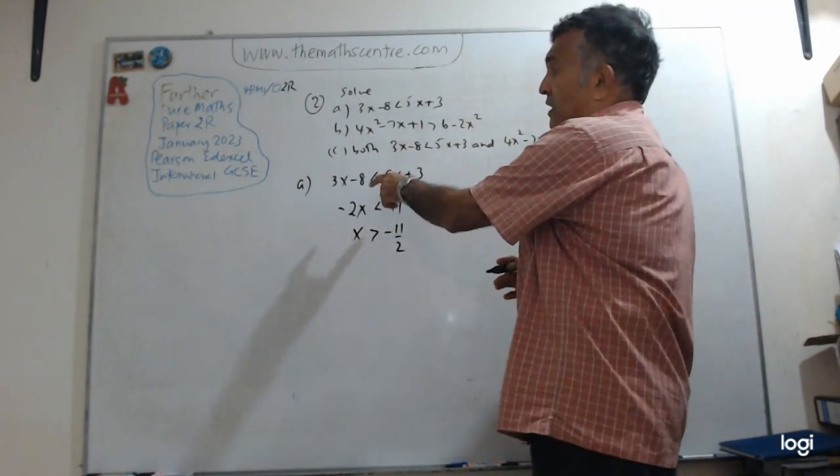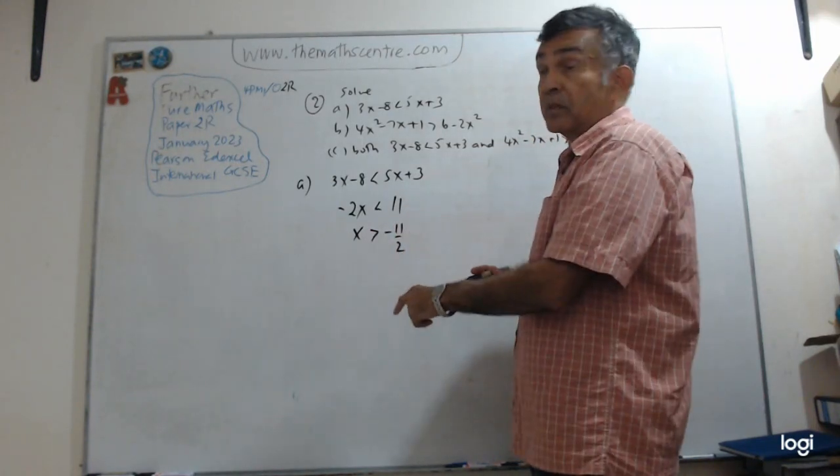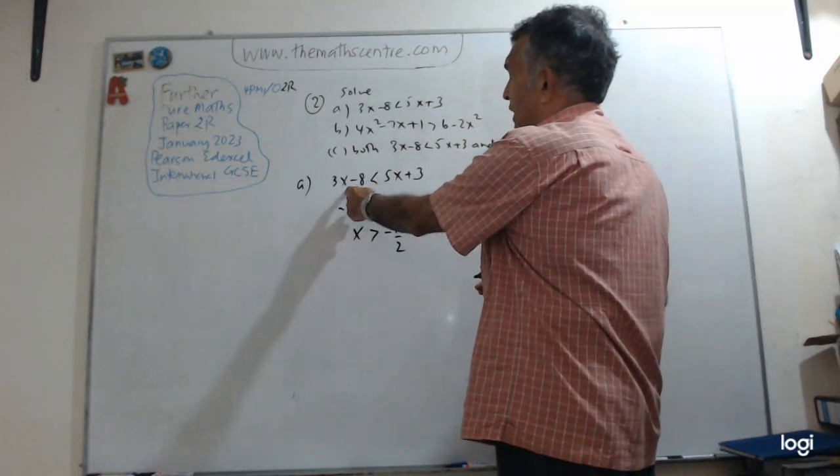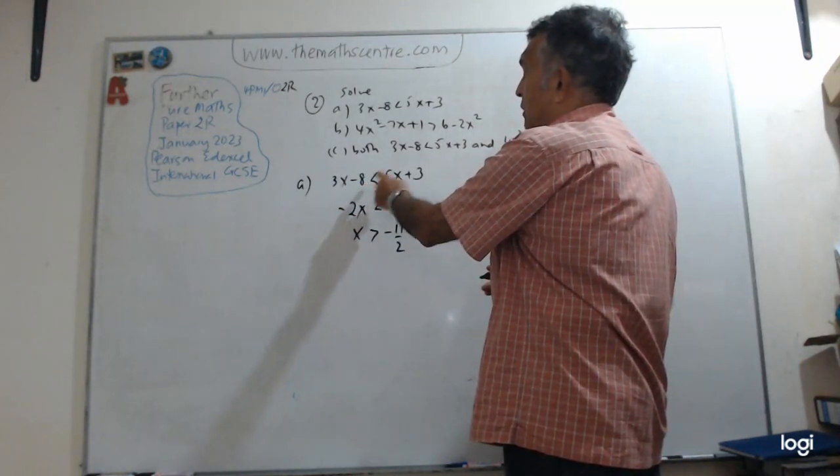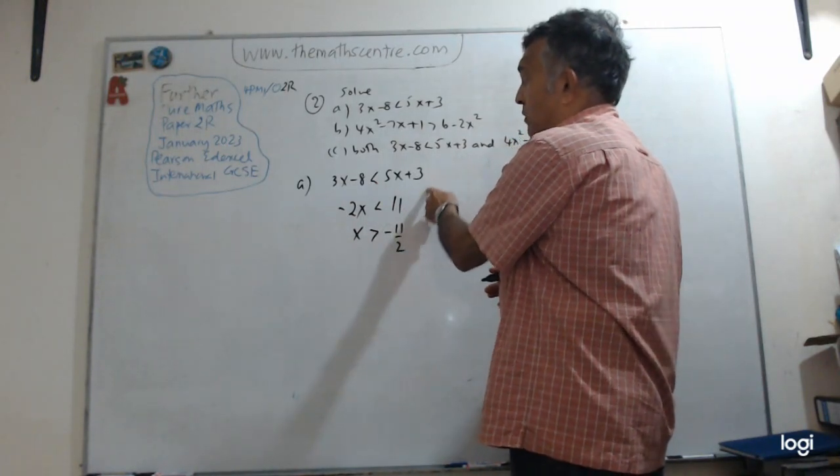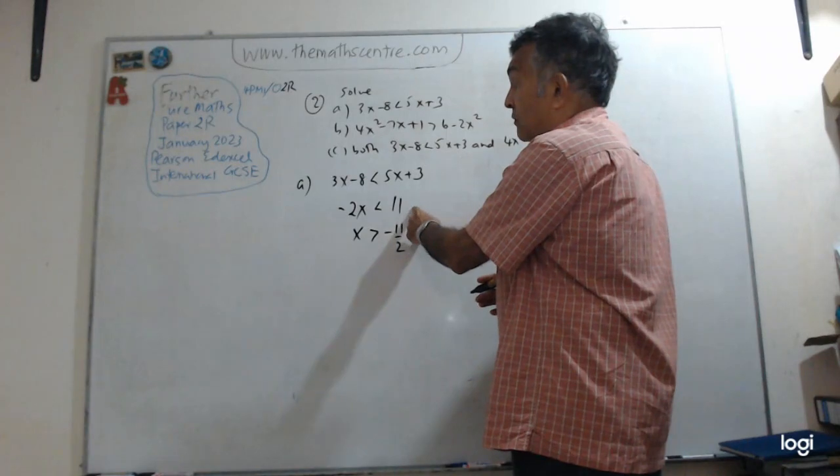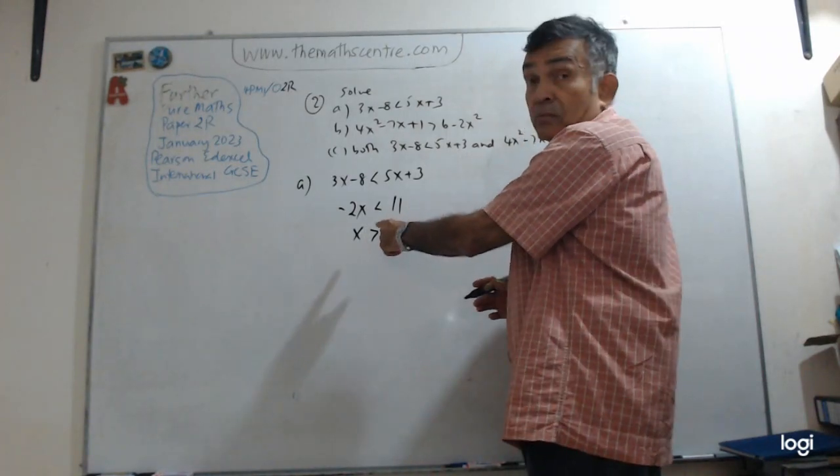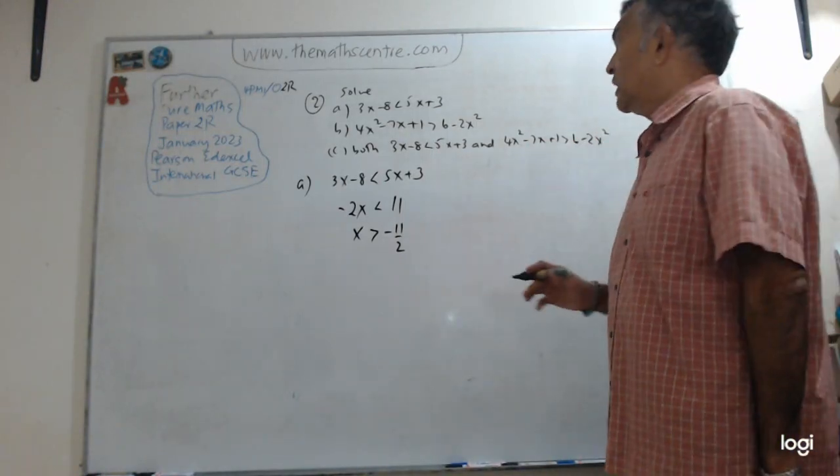The question is set deliberately in this way so you might be tempted to make some mistakes. So just do it slowly. Bring the 5X to this side, so 3X minus 5X. Then I brought the minus 8 to this side. This is easy, from this line to this line. Just be careful though. When you divide by negative 2, then you need to change the sense of the symbol. So you have X bigger than negative 11 over 2. Easy. Let's settle B.